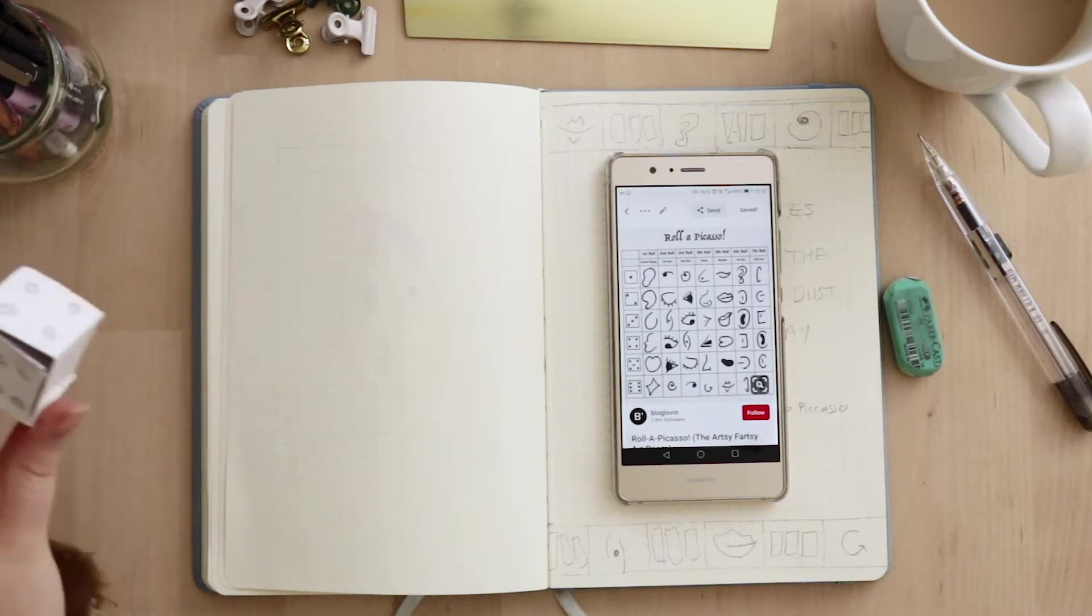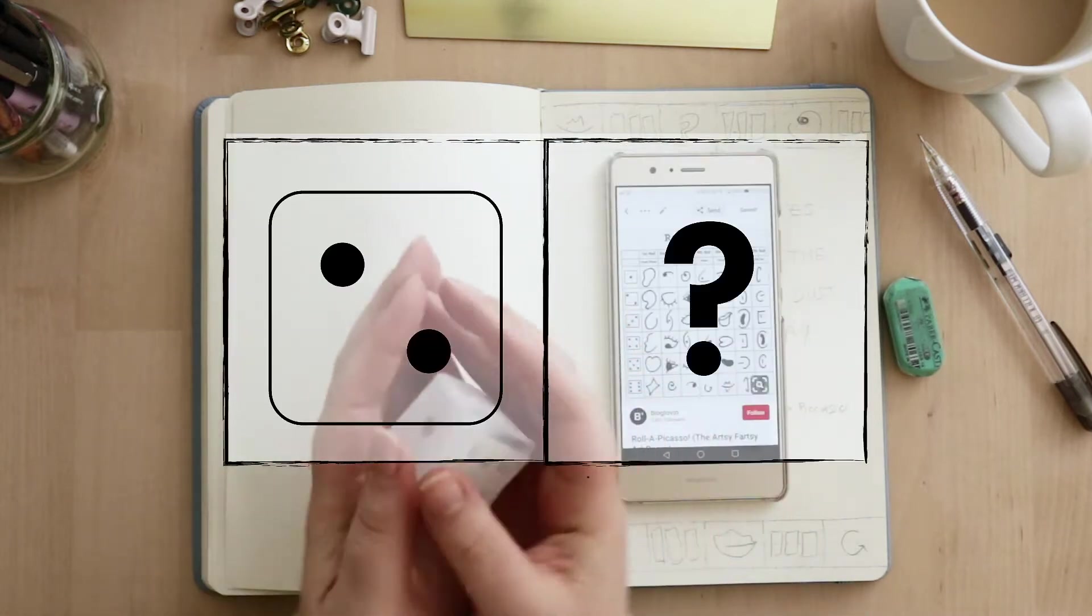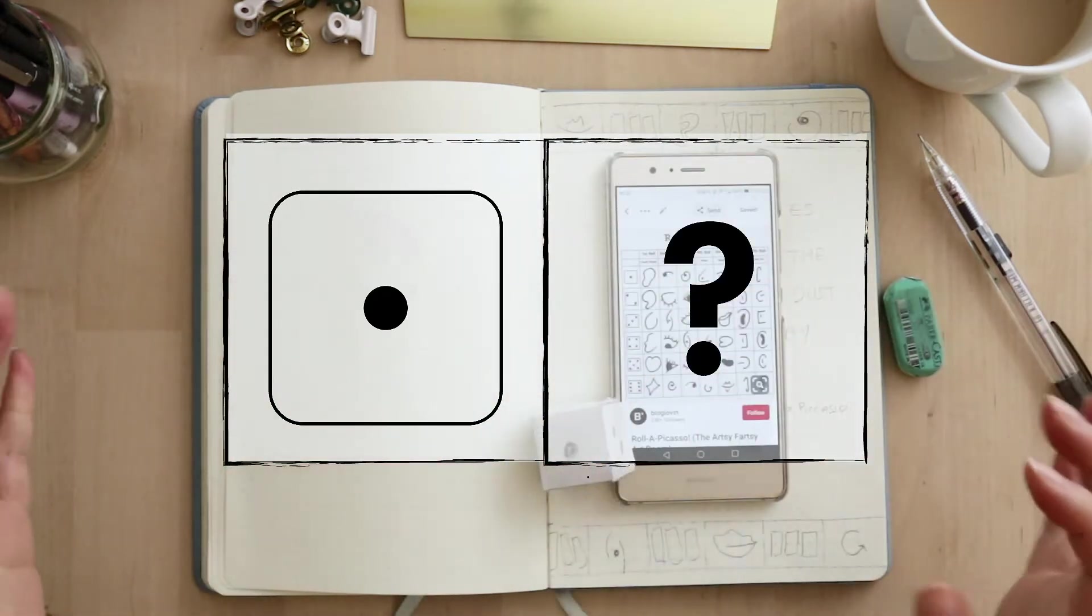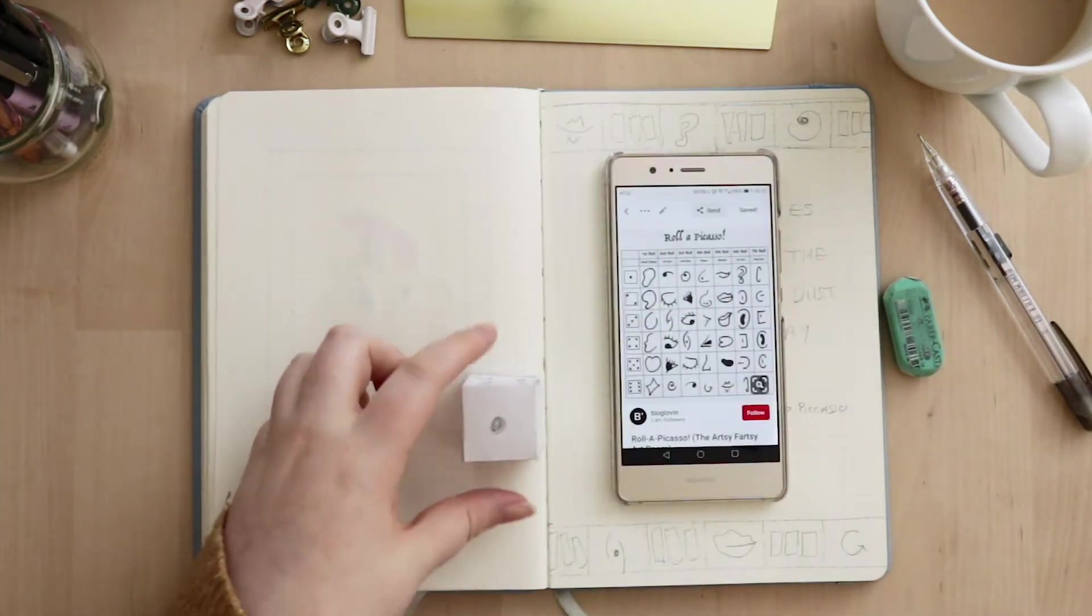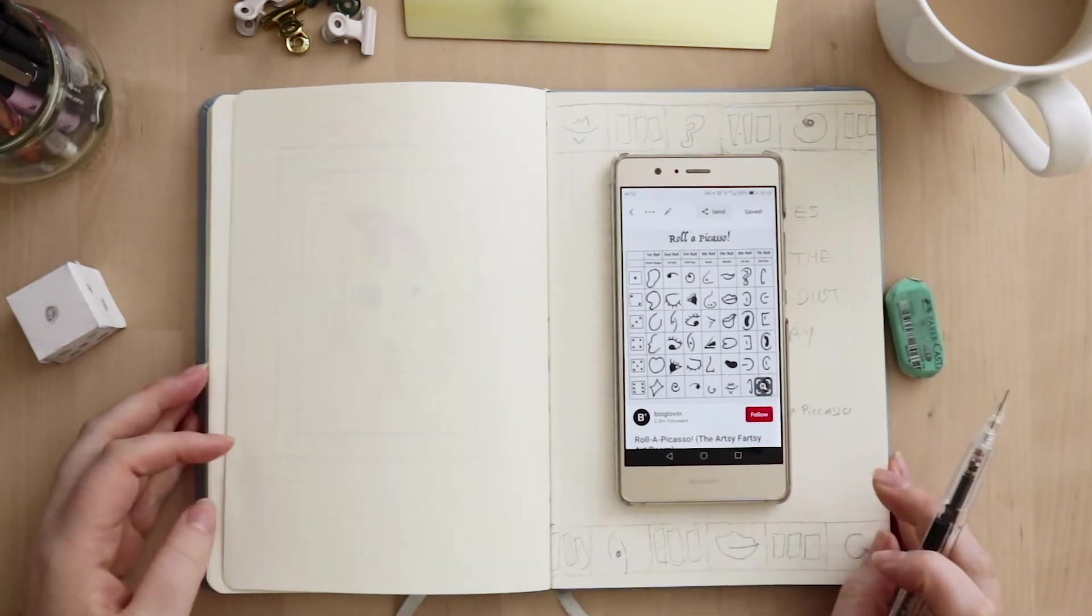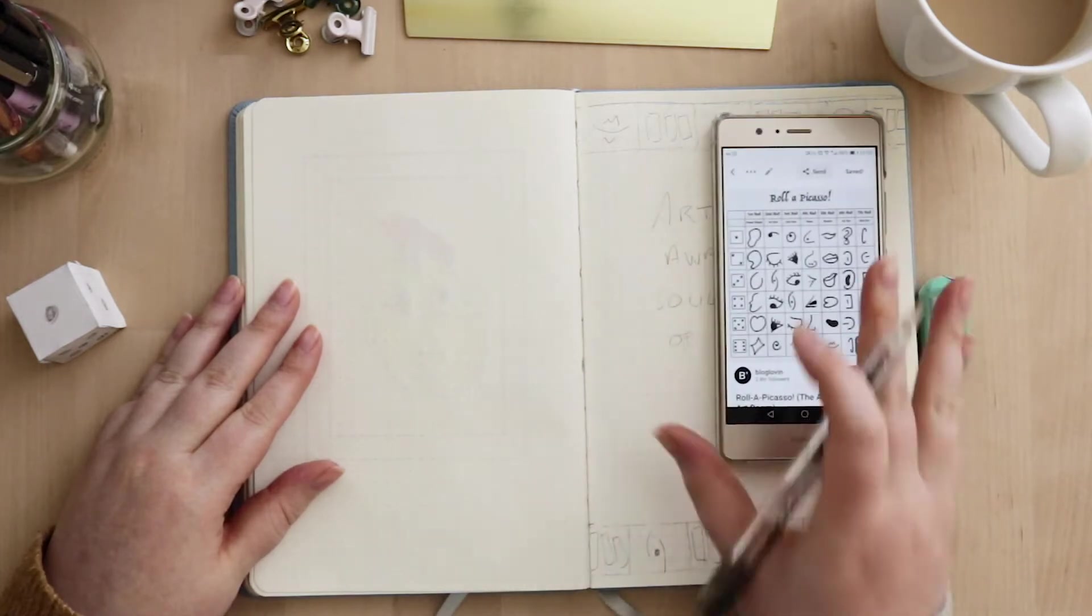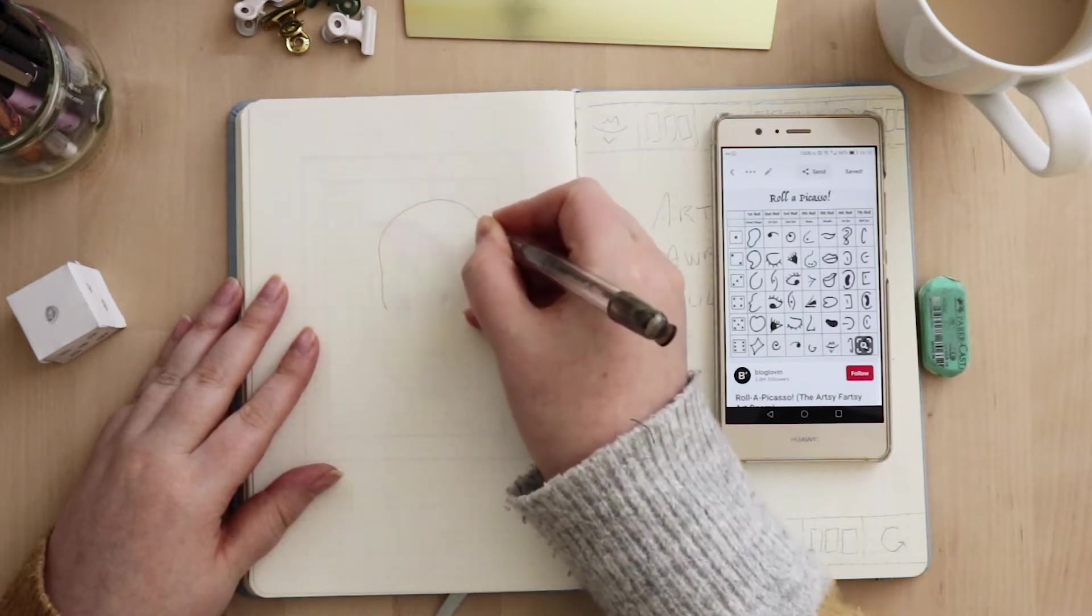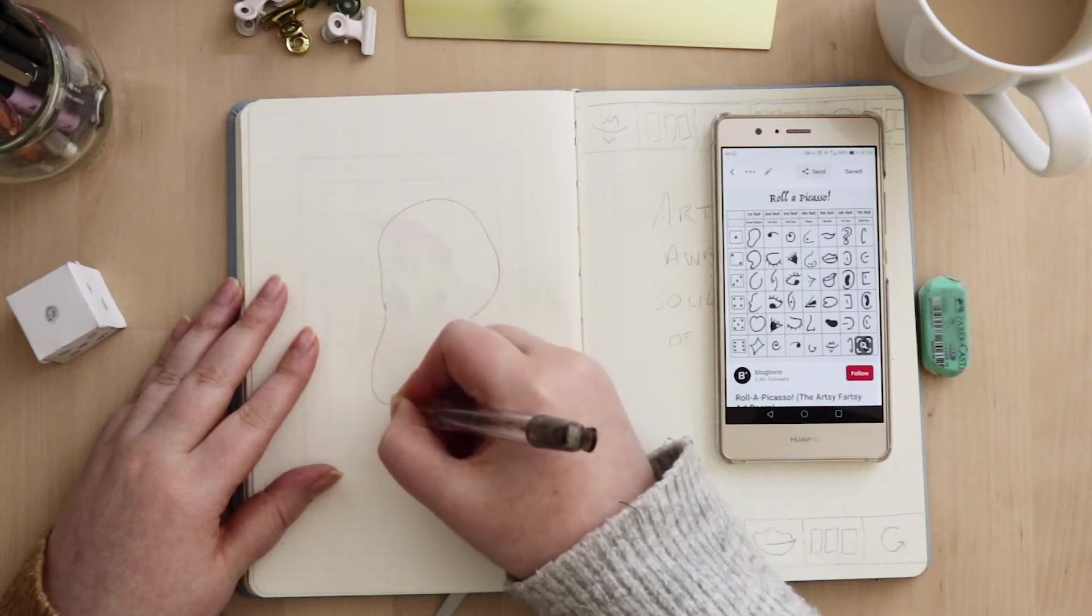Each roll of the dice will give you a different element of the face. The first roll is for the actual face shape and I got this weird bean kind of shape. Then you just go ahead and draw that in. I drew it kind of freehand, didn't really measure anything. You'll see a bit later that it didn't land up quite centered on the page, so if you're a stickler for being centered maybe just measure out a rough idea.